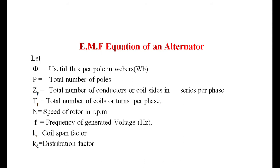For the EMF equation, phi is the useful flux per pole in webers, P is the total number of poles, Zp is the total number of conductors or coil sides in series per phase, Tp is the number of turns per phase, N is the speed of the rotor in RPM, f is the frequency of the generated voltage, and Kc and Kd are the coil span factor and distribution factors.